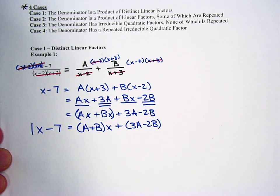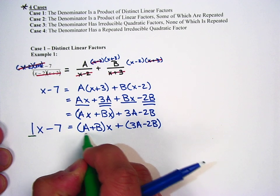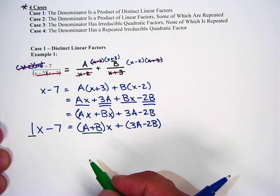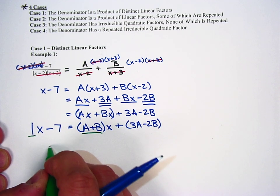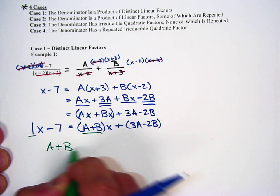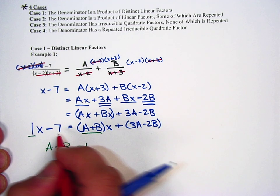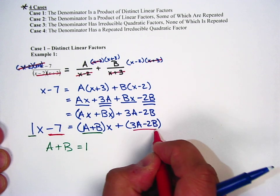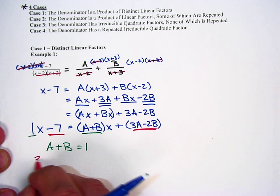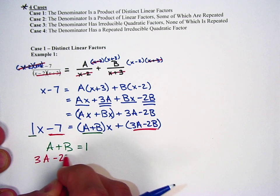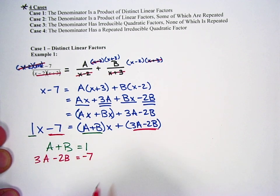The good thing about this is 1 is the coefficient of the x on the left, A plus B is the coefficient on the x on the right. So A plus B equals 1. We also have negative 7 being the constant in 3A minus 2B. So we have 3A minus 2B equals negative 7.